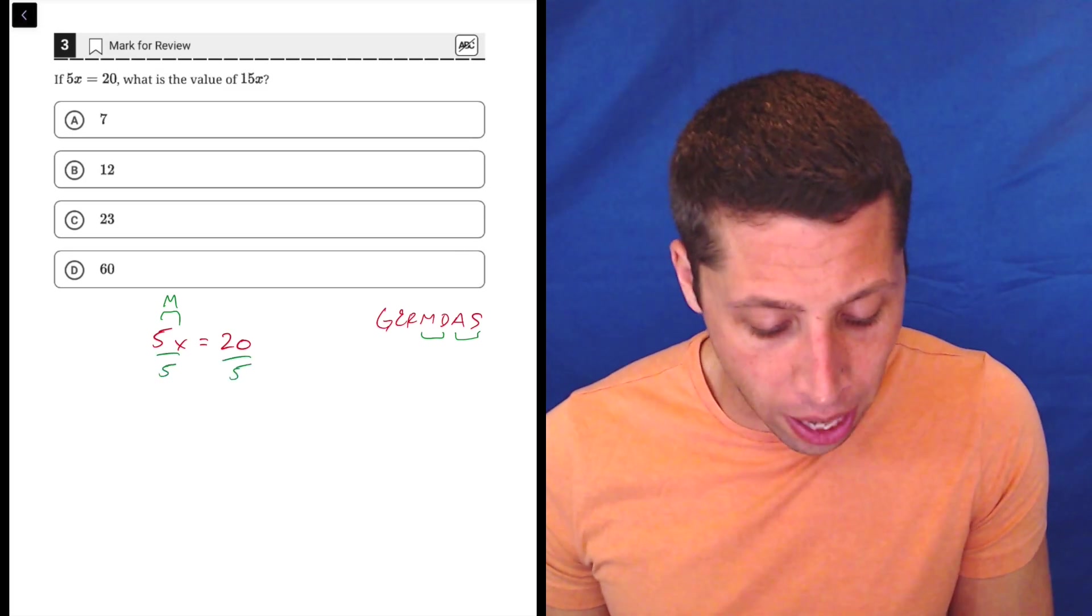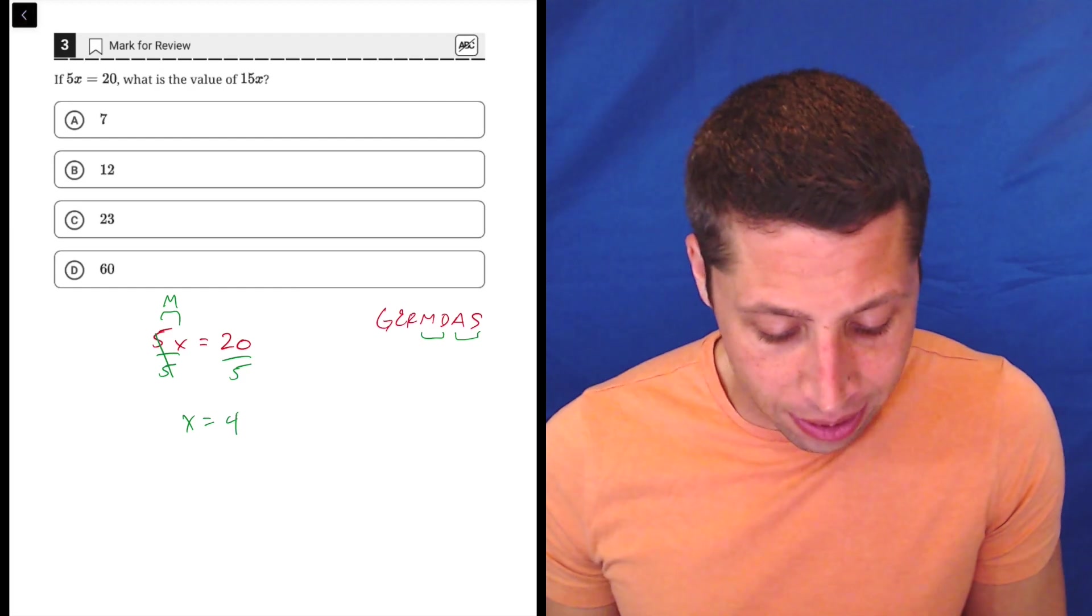We divide both sides by 5, and that's gonna give us x is equal to 4.